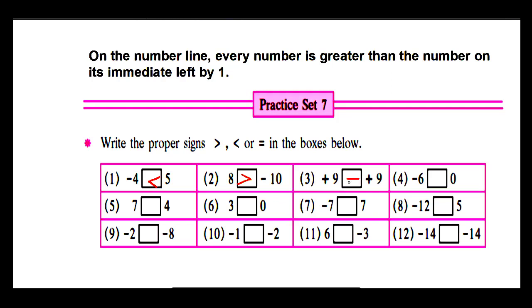Example 3: positive 9 and positive 9. Same numbers, so it's an equal sign. Example 4: negative 6 and 0. 0 is greater than negative 6.